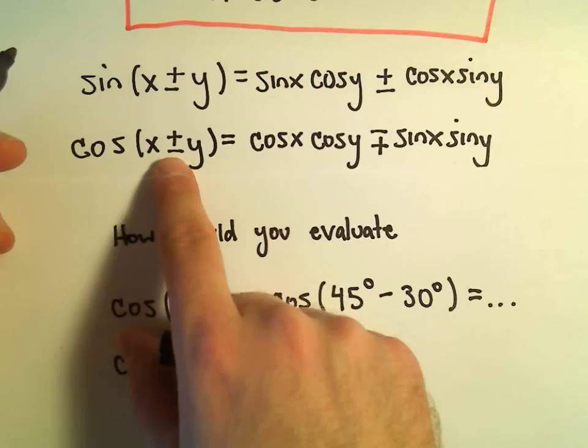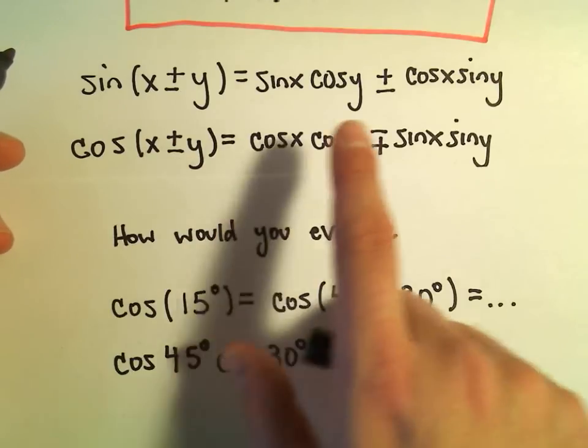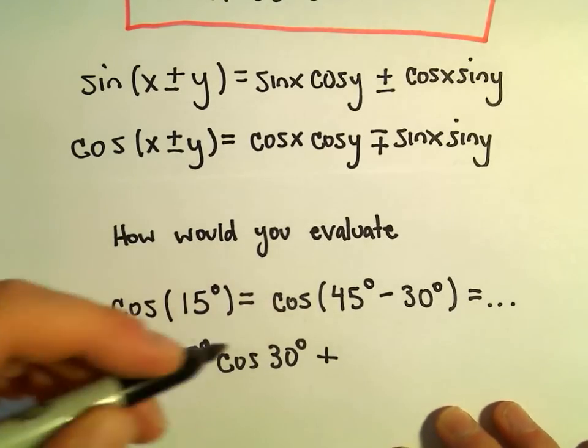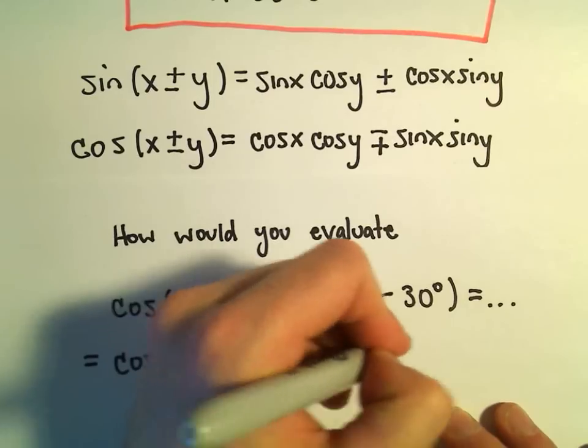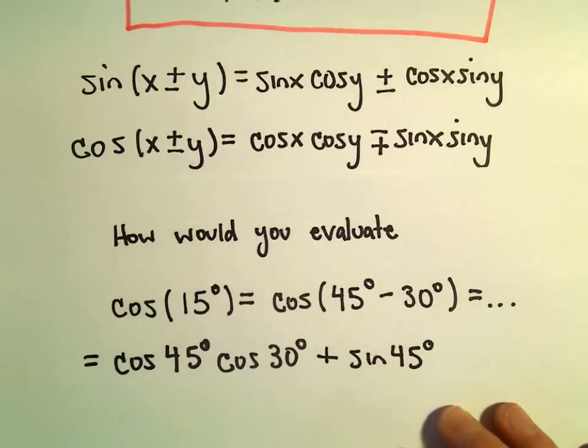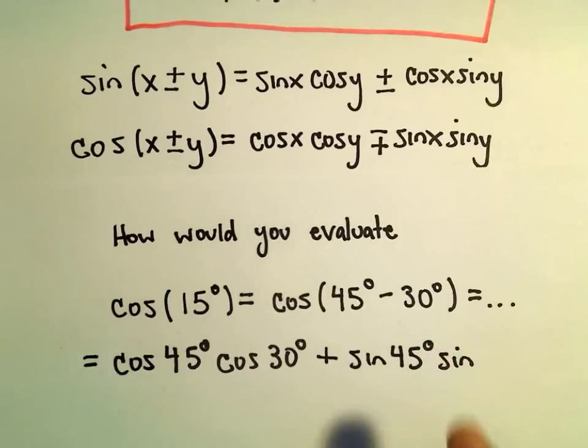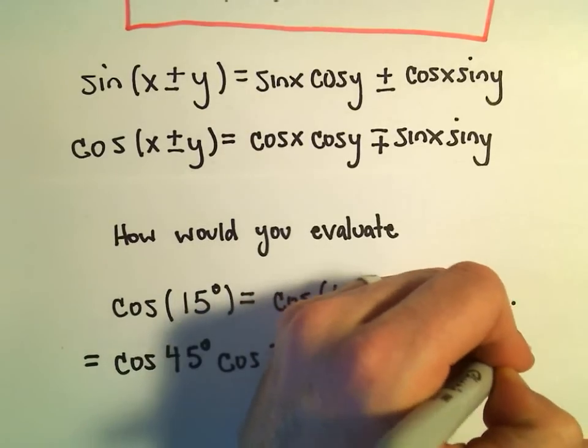If there's a negative sign in between, a minus sign in between, it says you turn it into a plus when you expand it out. And then you use sine of the first quantity, which is 45 degrees, and then we multiply it by sine of the second quantity, which is 30 degrees.